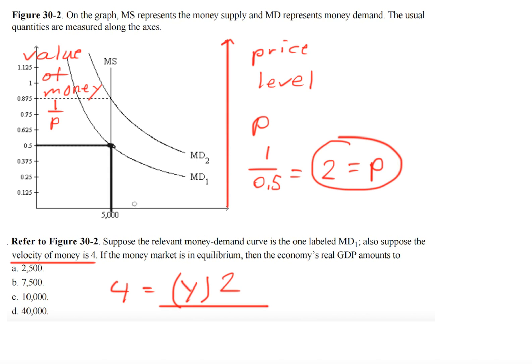So we get 2. And we divide it by the quantity of money right here. And if we rearrange and do some algebra to solve for Y, we get that our answer will be 10,000, which is C.